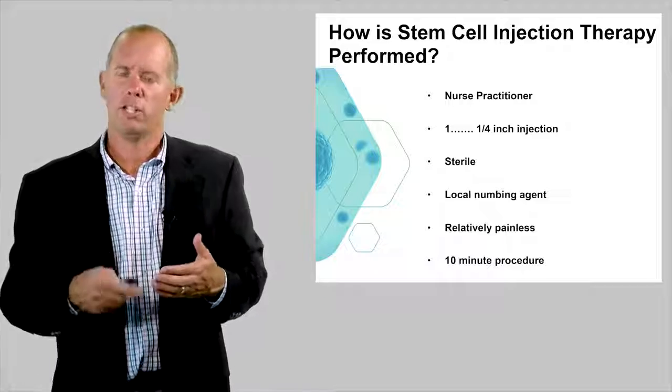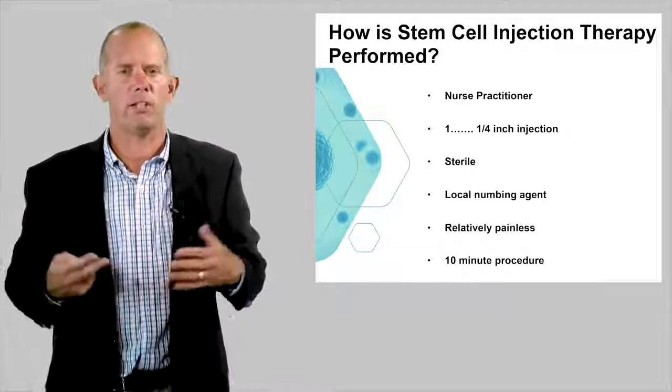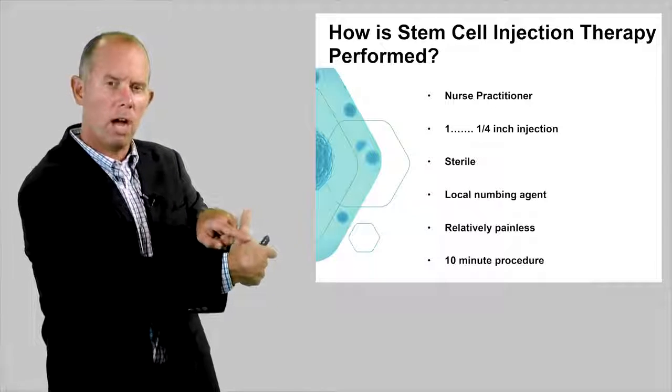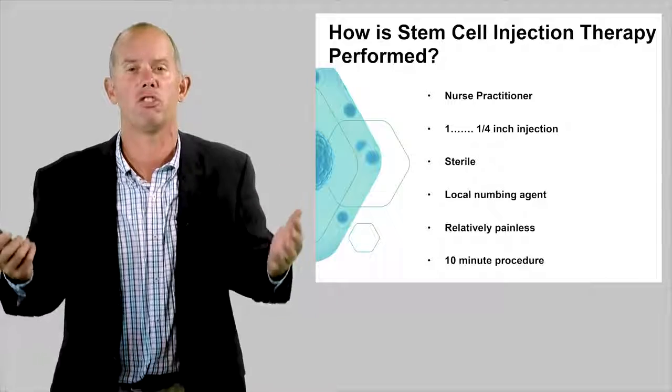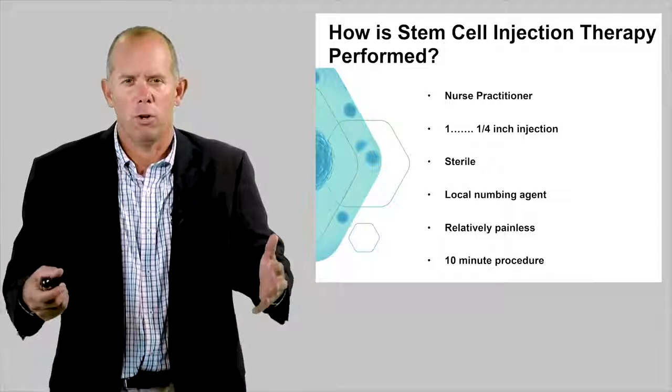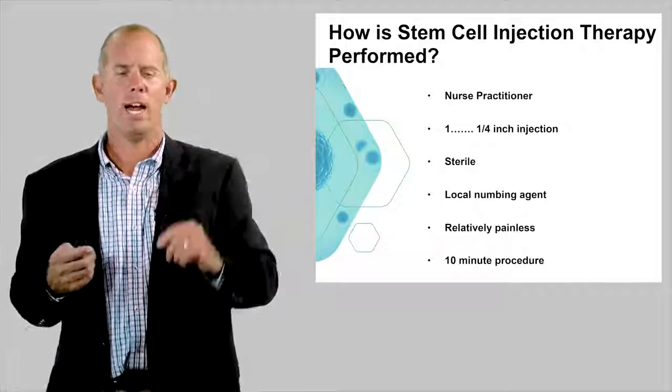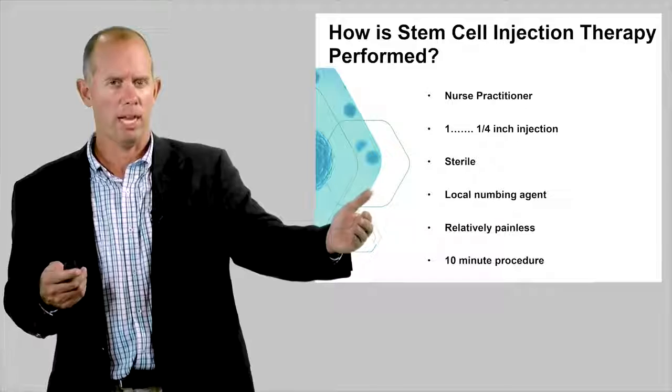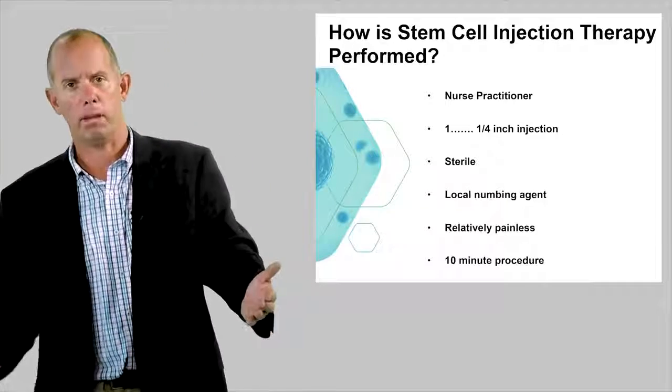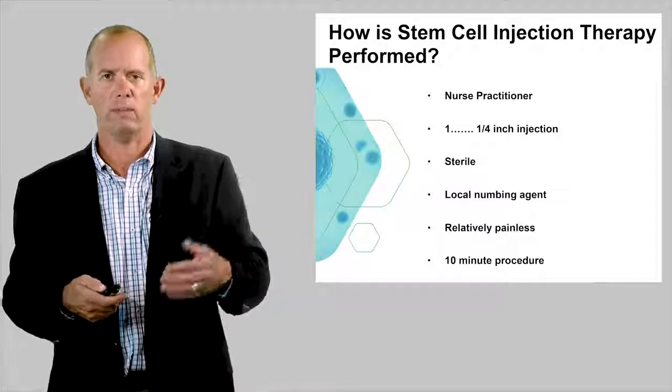So how is stem cell therapy performed in our office in Portsmouth, New Hampshire? Well, our nurse practitioner, Rachel Marino, she is licensed in the state of New Hampshire. She has primary care status. It's one simple quarter-inch injection into the dorsum of the penis. Right into the dorsum, the part that comes up to your belly. It's really easy. It's super sterile, obviously. There's a local numbing agent, so you don't feel anything. It's relatively painless. You may feel a little bit of a prick. But it's a 10-minute procedure. You only have to come to the office one time.